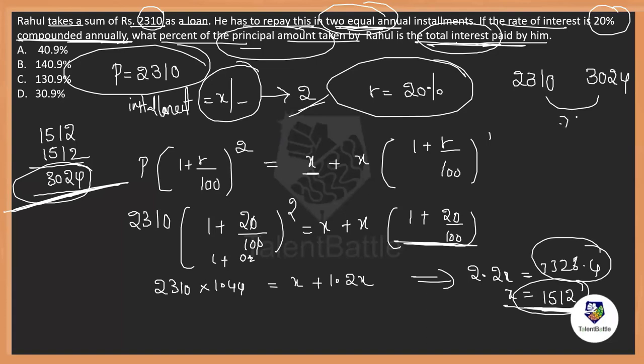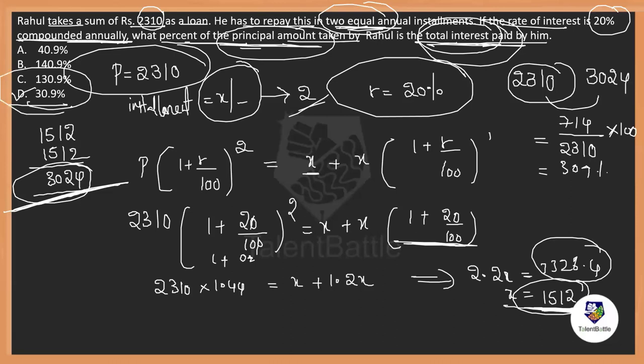That means what is the interest occurred? The interest occurred is nothing but 714 rupees. So, they are asking interest occurred is what percentage of the principal. So, 714 is the interest and the principal is 2,310 rupees. So, into 100 will give us the percentage which is 30.9 percentage. Option D is the correct answer.